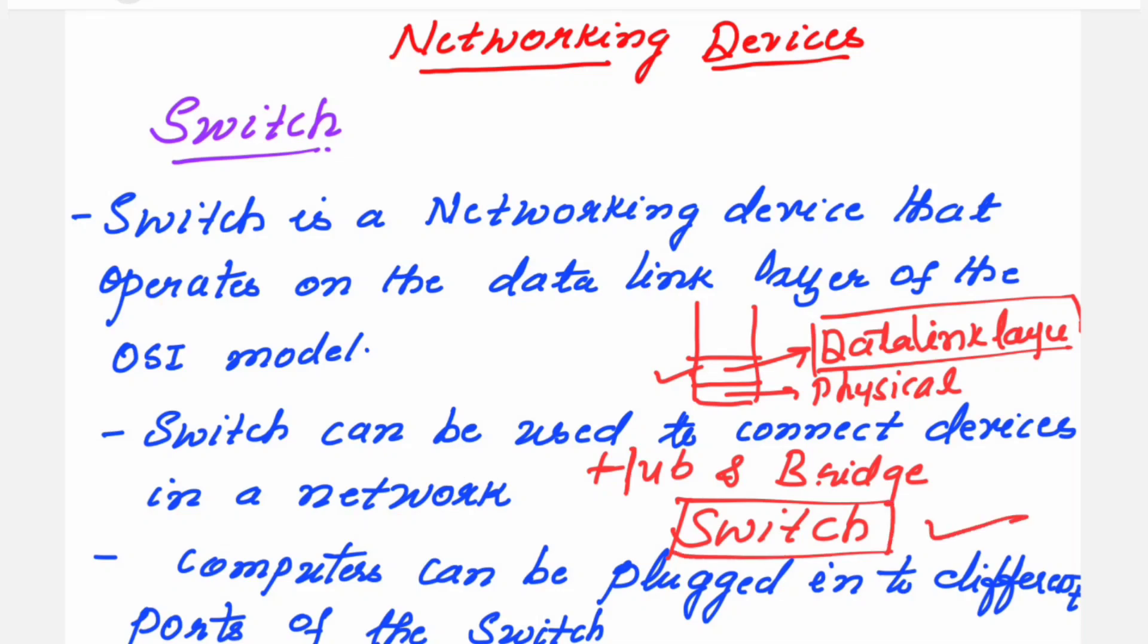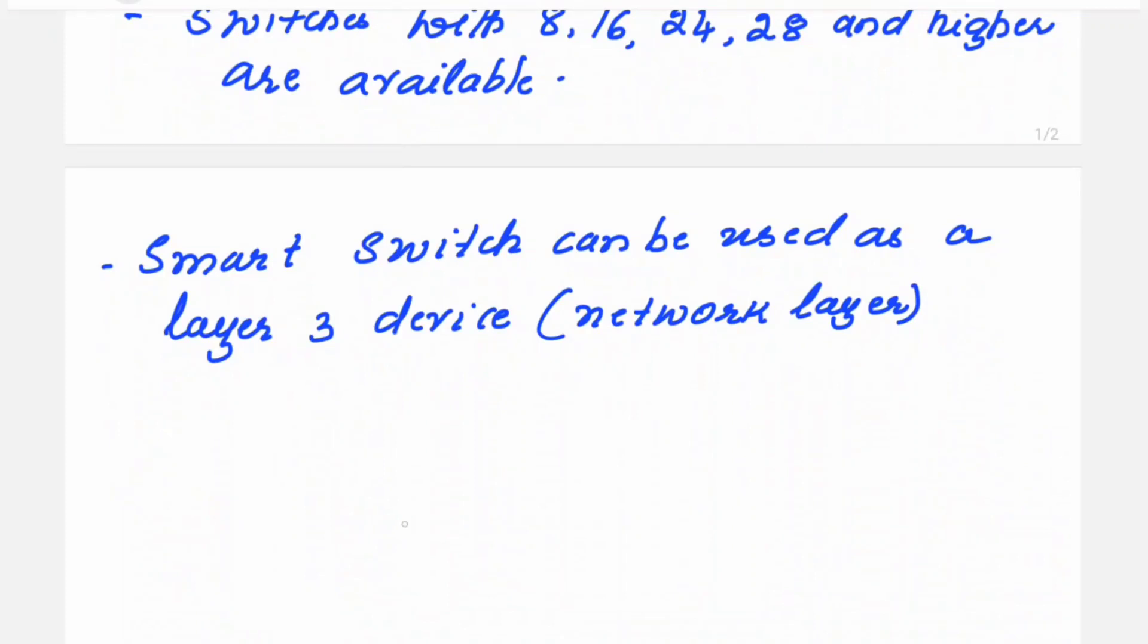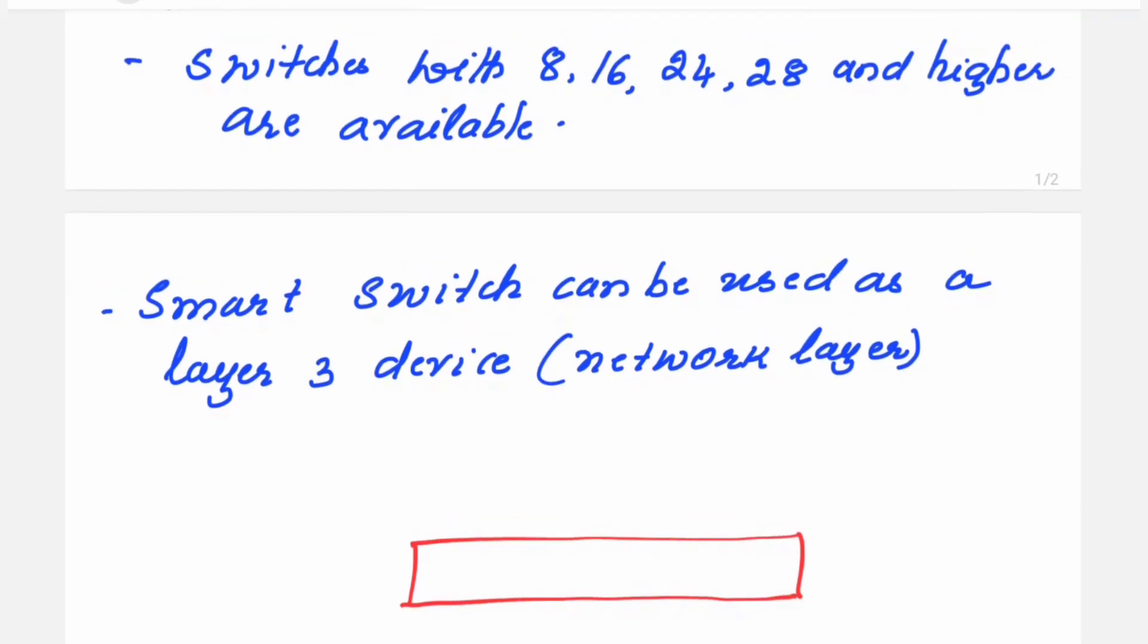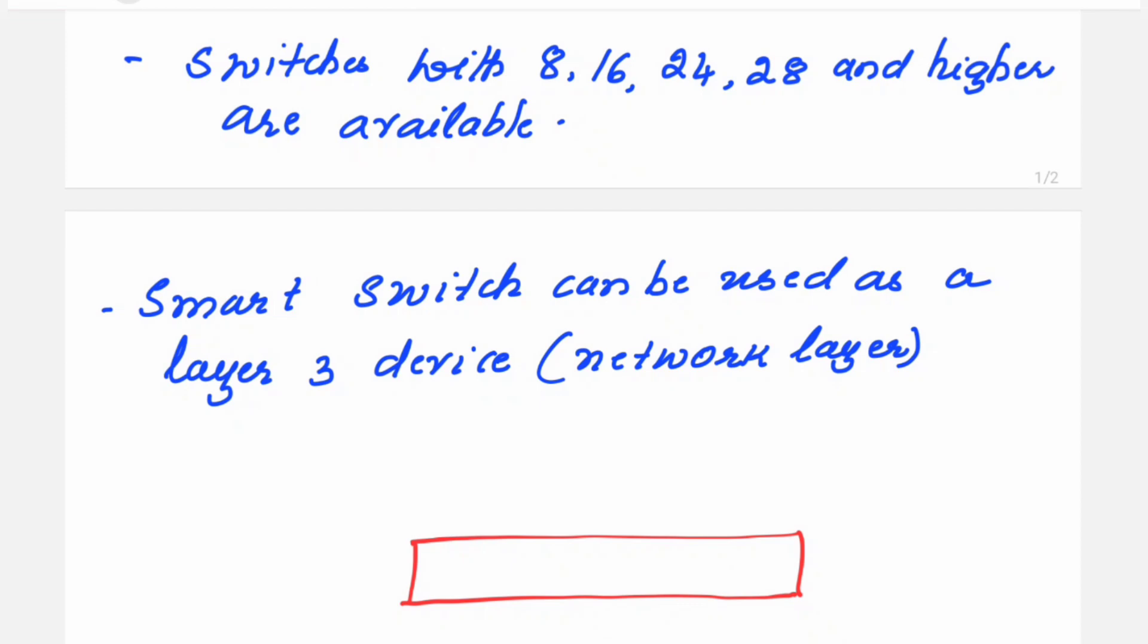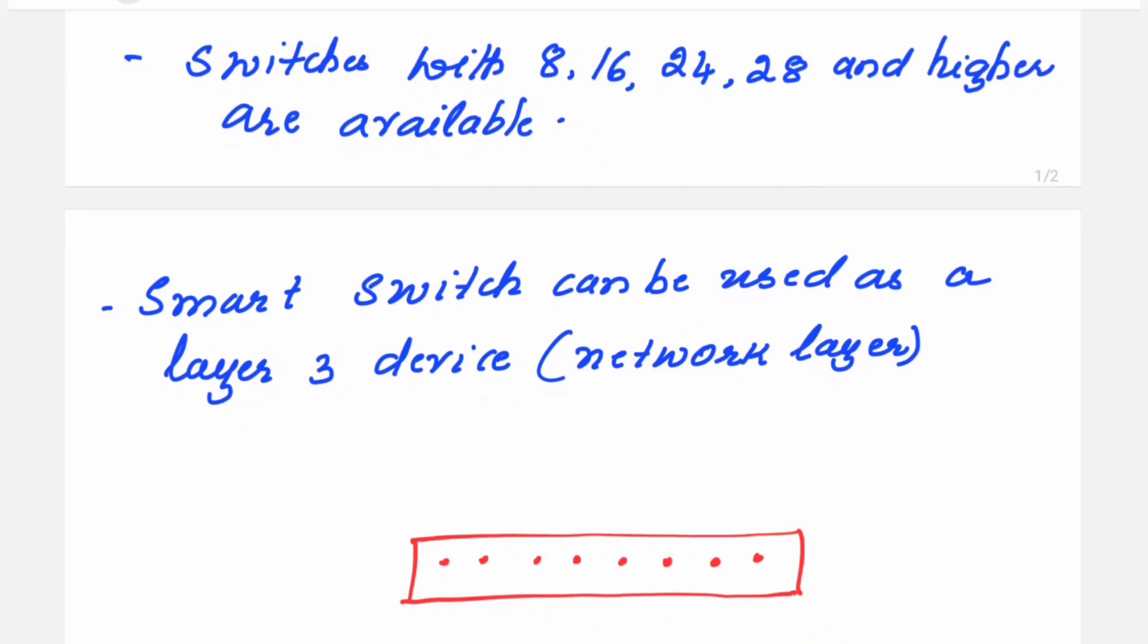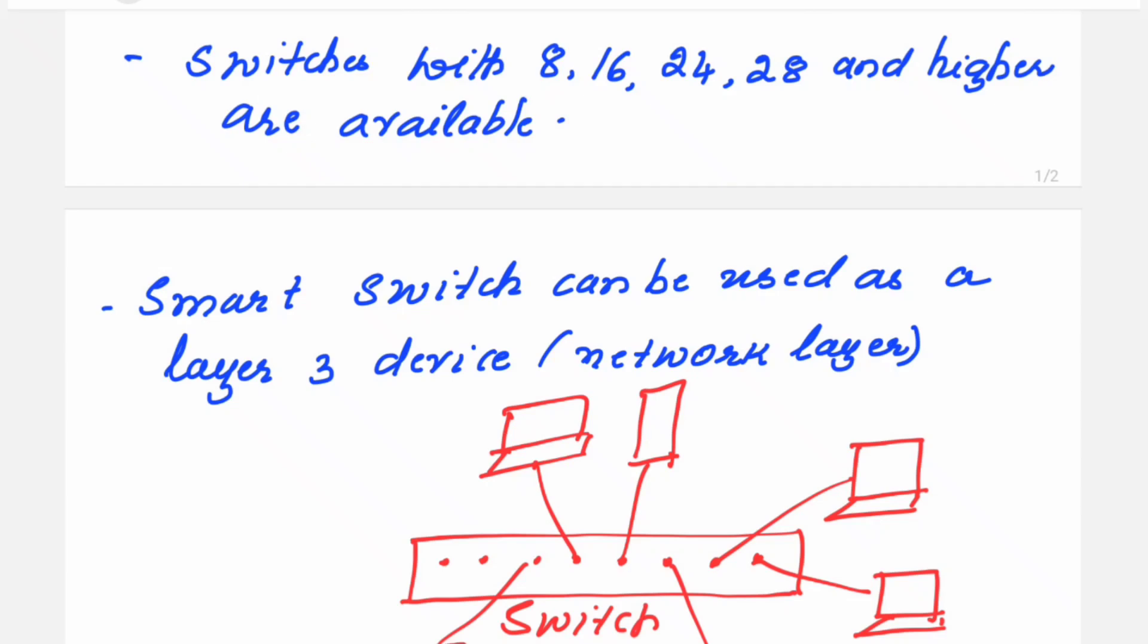It can be used to connect devices in a network. In order to make one LAN you require different systems to get connected. Switches with 8 ports, 16, 24, 32 and higher are available. Let us take for example there are 8 ports here. You can connect different types of devices. Suppose you are using PCs, then you can connect the laptop here, you can connect your mobile phone. Different types of devices can be connected in a LAN.